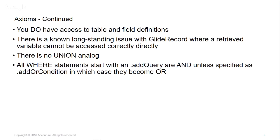All WHERE statements start with addQuery. Your first addQuery, second addQuery, third addQuery all operate as AND, AND, AND — and you can interrupt that with an OR condition tacked on to a particular AND statement. So you can do addQuery, dot addOrCondition, dot addOrCondition, and so on, which gives you 'where this OR this OR this.' I've got a couple of techniques that will show how to simplify that structure and make more maintainable code.